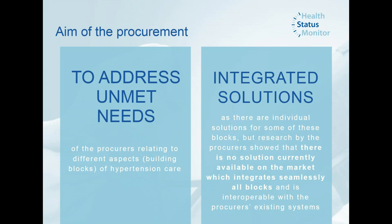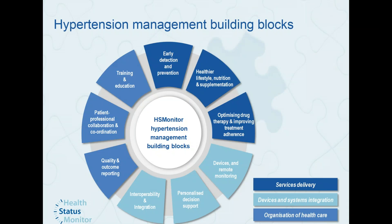We want to talk about the scope of the planned procurement. The main unmet need the procurers are looking to address is related to hypertension care, and we're looking for integrated solutions. During the project proposal, we looked at different elements and found them fragmented, so we're looking for integrated solutions covering a wide area of what we call building blocks — solutions that are interoperable with existing systems and work seamlessly at the procurers' premises. We identified nine hypertension management building blocks grouped into three groups: delivery of services, devices and systems integration, and organization of healthcare.